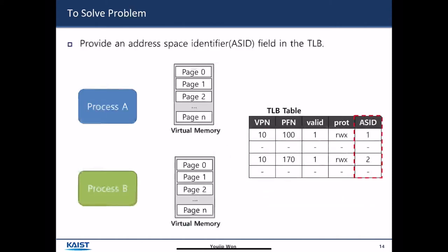To handle this issue, we add a field called address space identifier, ASID. It is a field in the TLB and contains a few bits of the process ID. We don't need to store the full process ID in the TLB entry — just a few digits of the process ID are used to distinguish the correct TLB entry. This type of TLB is termed a tagged TLB.